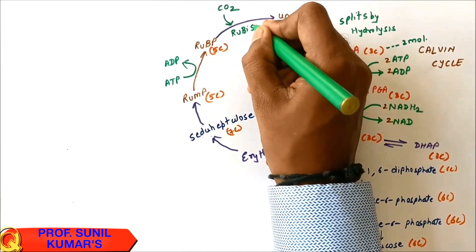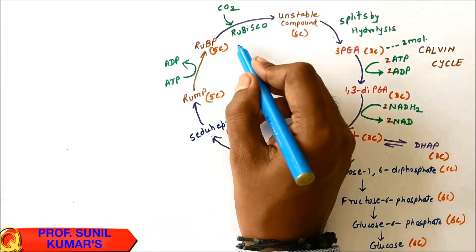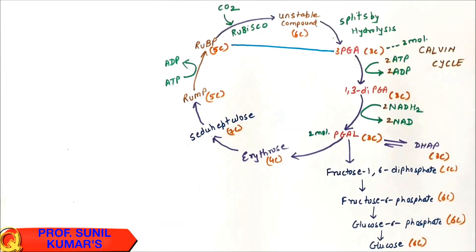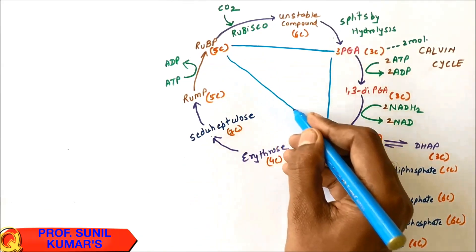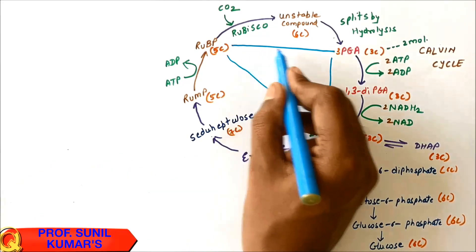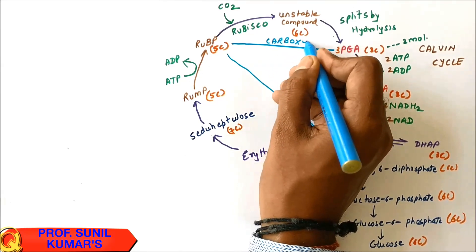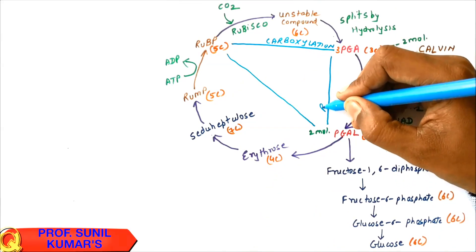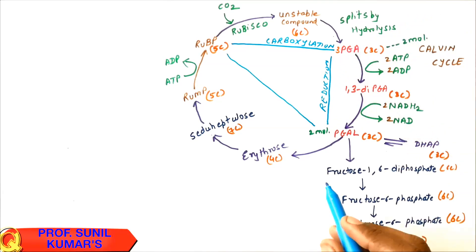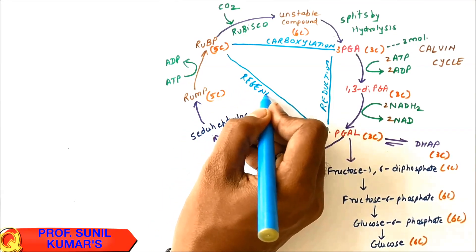The formation of the unstable compound from RUBP occurs in the presence of the enzyme Rubisco — ribulose biphosphate carboxylase. The Calvin Cycle has three major stages: carboxylation, where CO2 is fixed onto RUBP; reduction, where 1,3-diPGA is reduced to PGAL; and regeneration, where RUBP is regenerated from RUMP.